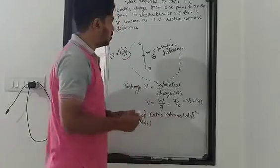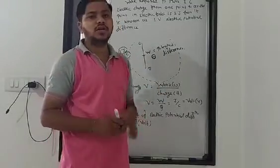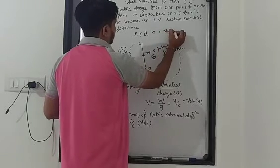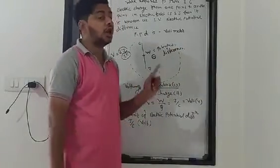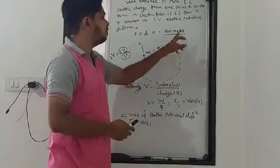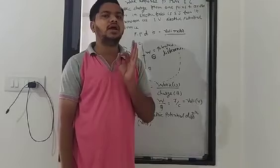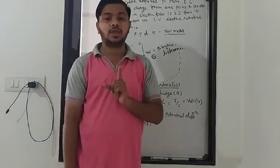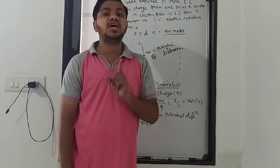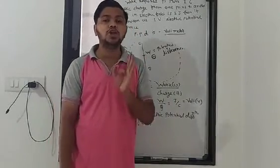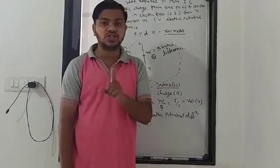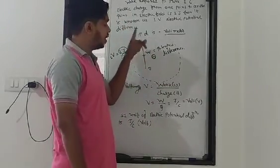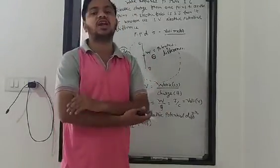Just as electric current is measured by an ammeter, the electric potential difference is measured by a Voltmeter. Remember that the Voltmeter is not used for measuring electric potential — it always measures electric potential difference. It always measures the difference in electric potential.